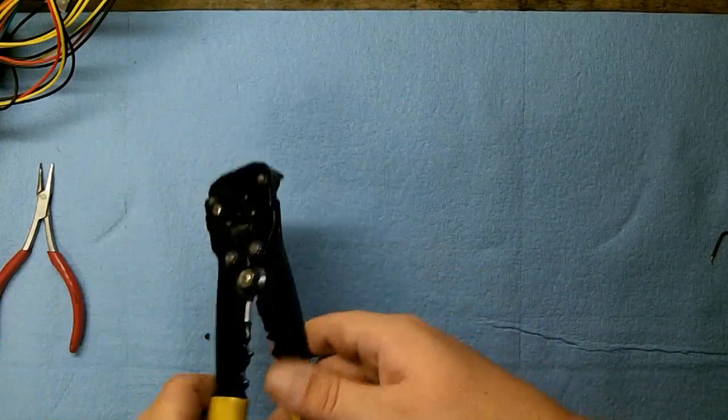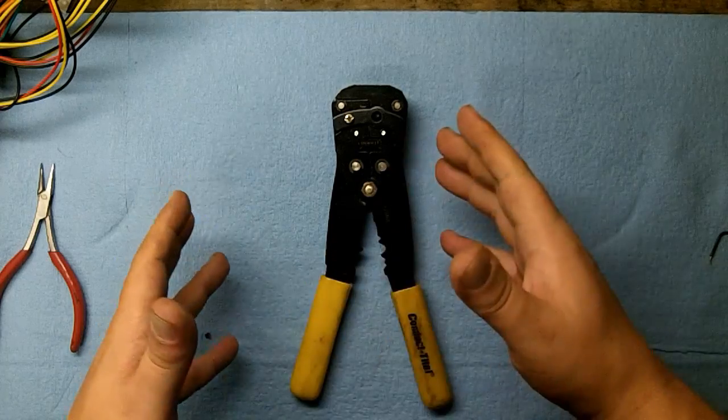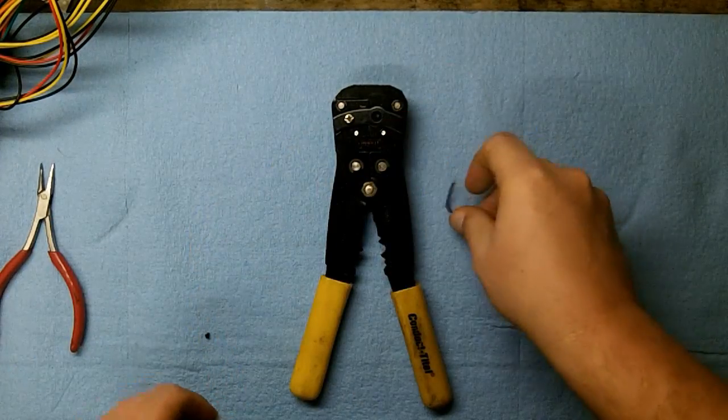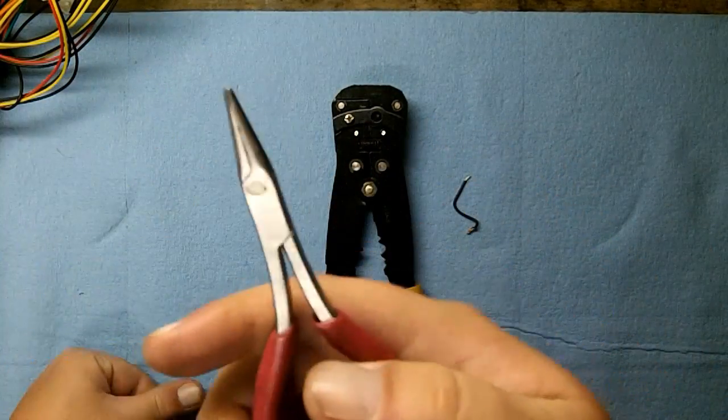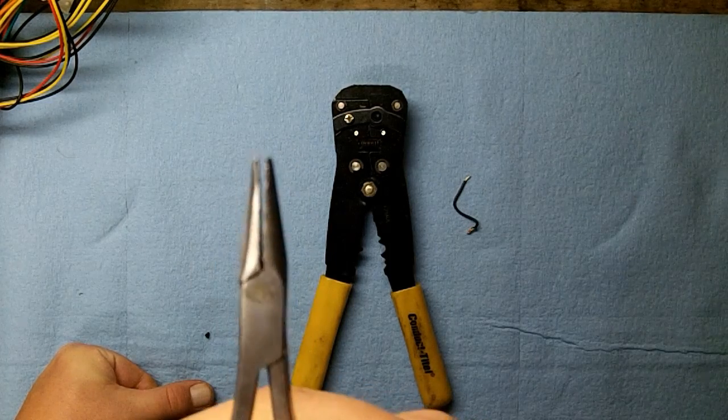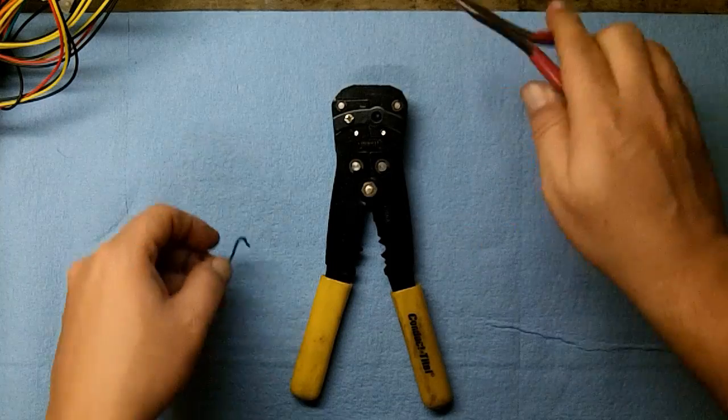So before we begin with that, supplies that you're going to need. Wire stripper. You could also use an X-Acto blade, a razor blade. It's just to strip off jacket from the wire. I use these small needle-nose pliers because they have a really small bend to it. And in this application, these are actually going to come in really handy because you have to make really small turns.